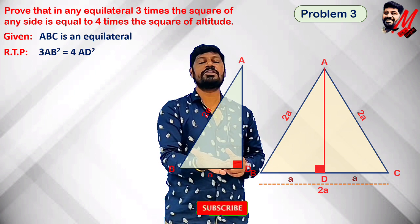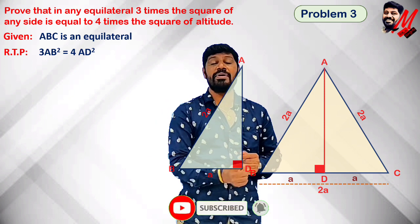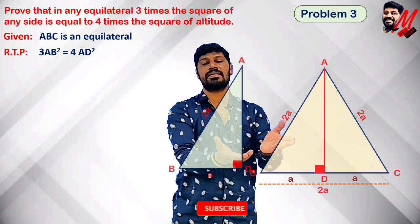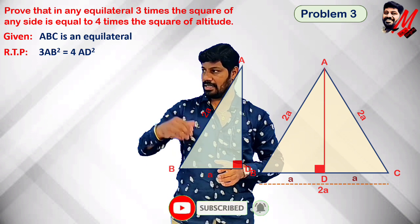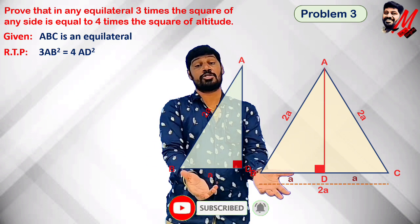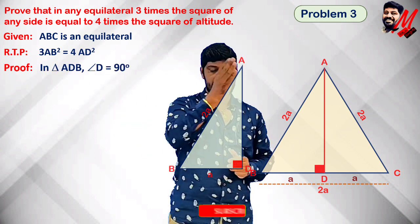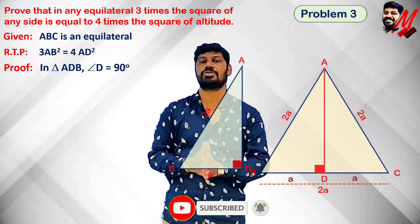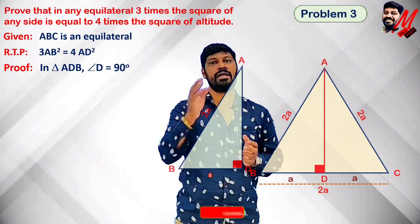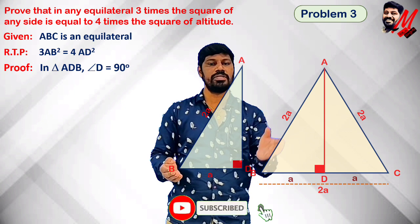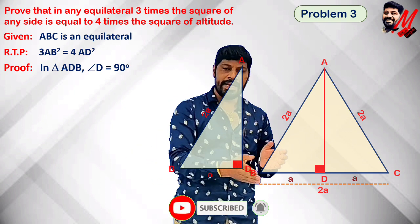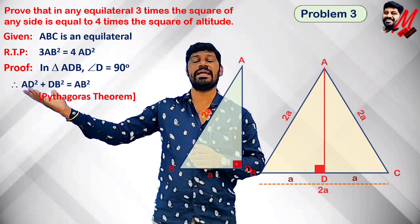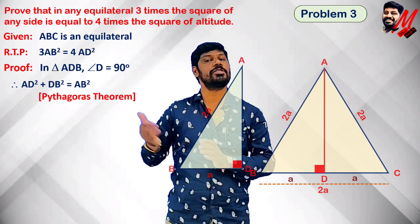So this is clearly a right triangle. AB length is 2a, BD length is a, and we have the missing side AD. We will calculate it using the Pythagorean theorem. Applying Pythagoras to right triangle ADB, where angle D is 90 degrees: AB² = AD² + BD². So AD² + BD² = AB².